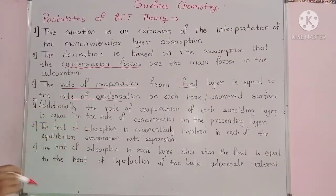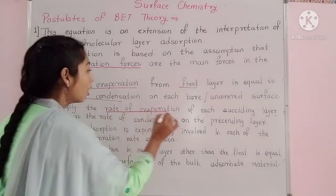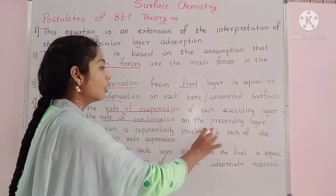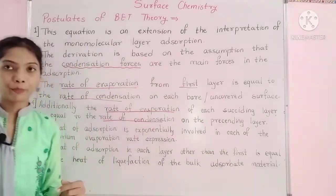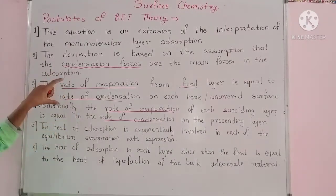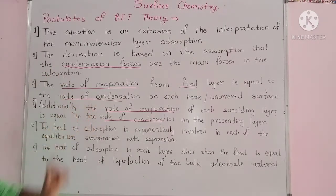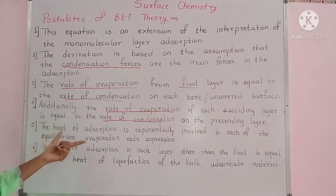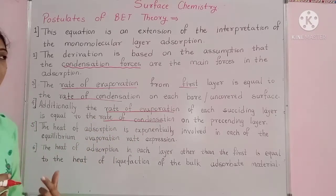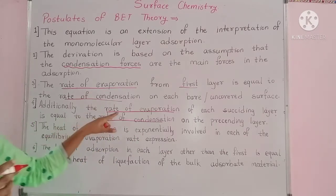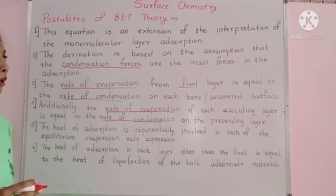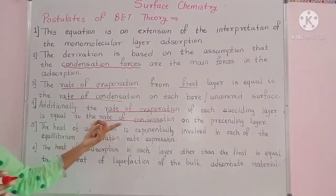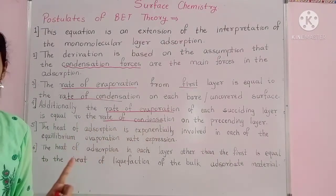Fourth one: additionally, the rate of evaporation of each succeeding layer is equal to the rate of condensation on the preceding layer. Same as third assumption, the fourth says that if we consider the second layer, the rate of evaporation of the second layer is equal to the rate of condensation of the first layer.